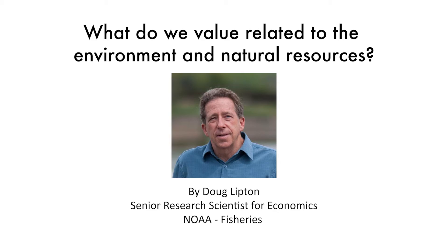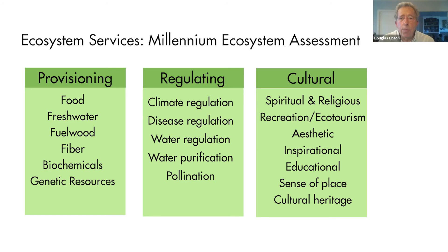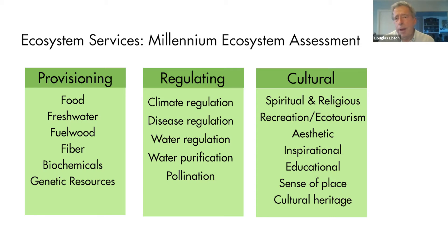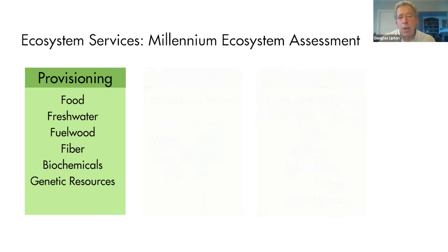What do we value related to the environment and natural resources? Folks have tried to come up with different categories of the types of things that we value related to ecosystem services. This chart was from the Millennial Ecosystem Assessment — it's one set of categories. Folks have gone back and come up with different categorizations of values, but you can see things here like provisioning value.